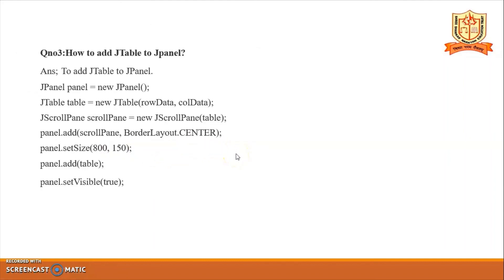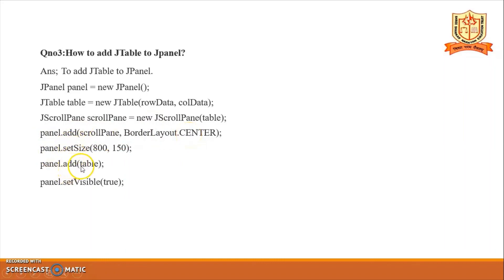Last question: how to add JTable to a panel? First create the panel object: JPanel panel = new JPanel(). Then create the JTable: JTable table = new JTable(rowData, columnData). Create a scroll pane object, add the table to the scroll pane, then call panel.add(scrollPane). Set the layout, set the size of the panel, and make the panel visible. That completes practical number 8.